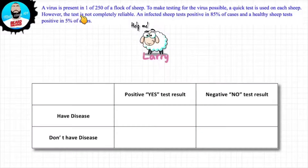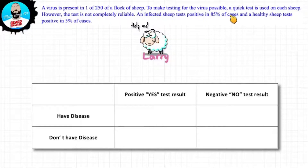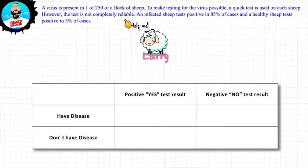A virus is present in one of 250 of a flock of sheep. To make testing of the virus possible, a quick test is used on each sheep. However, the test is not completely reliable. So let's say Farmer Joe takes Larry the sheep to get tested for lymphadenitis, a common infectious disease in sheep.